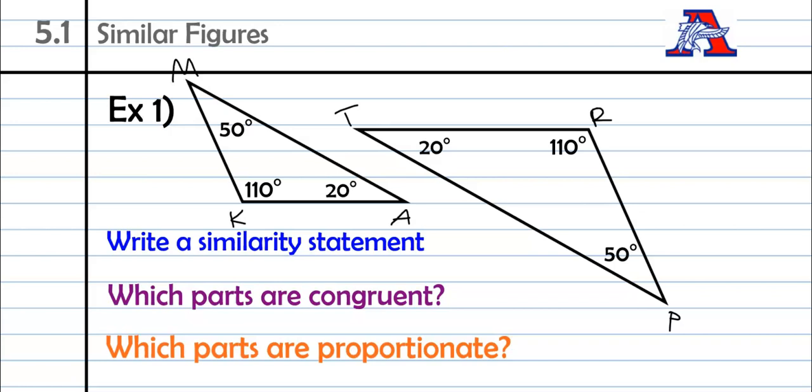I'm just randomly making up letters. So if we're going to write a similarity statement, this time since we're dealing with triangles we can use the triangle sign. And it doesn't matter how we start, I'm just going to go from smallest angle to middle angle to biggest angle. So I'm going to go AMK. And that's going to be similar to, now I'm going to make sure I go in the same order on the second triangle. So I went from the 20 degree angle to the 50 to the 110. So TPR, triangle TPR.